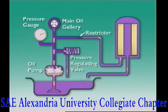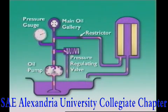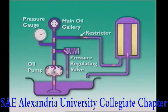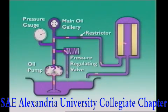By tapping an oil line into an oil passage, the bypass element collects finer particles than a full flow filter. After this oil is filtered, it goes back to the sump.